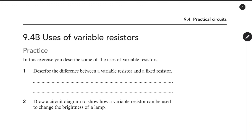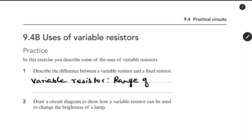9.4B Uses of Variable Resistors. In this exercise, you describe some of the uses of variable resistors. Describe the difference between a variable resistor and a fixed resistor. A variable resistor has a range of resistance values — we can change that.